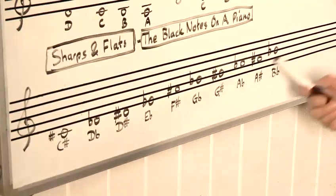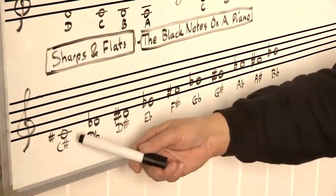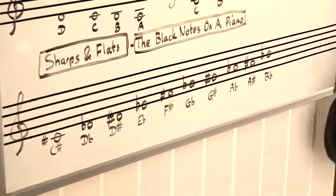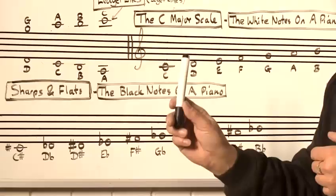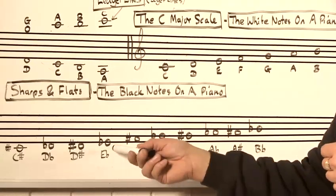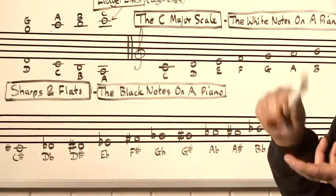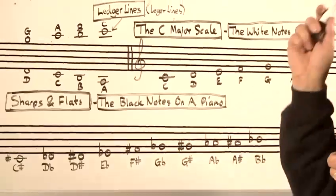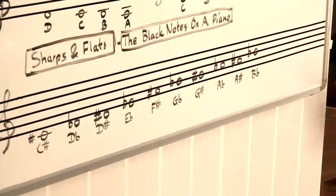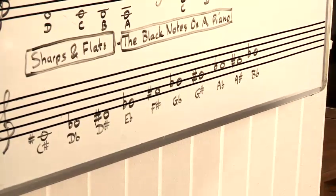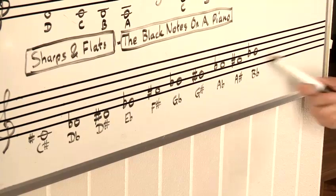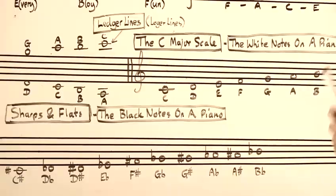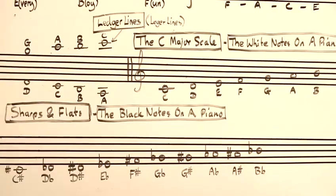Going through this list: C sharp and D flat are actually the same note. D sharp and E flat are the same note. F sharp and G flat are the same note. G sharp and A flat are the same note. A sharp and B flat are the same note.